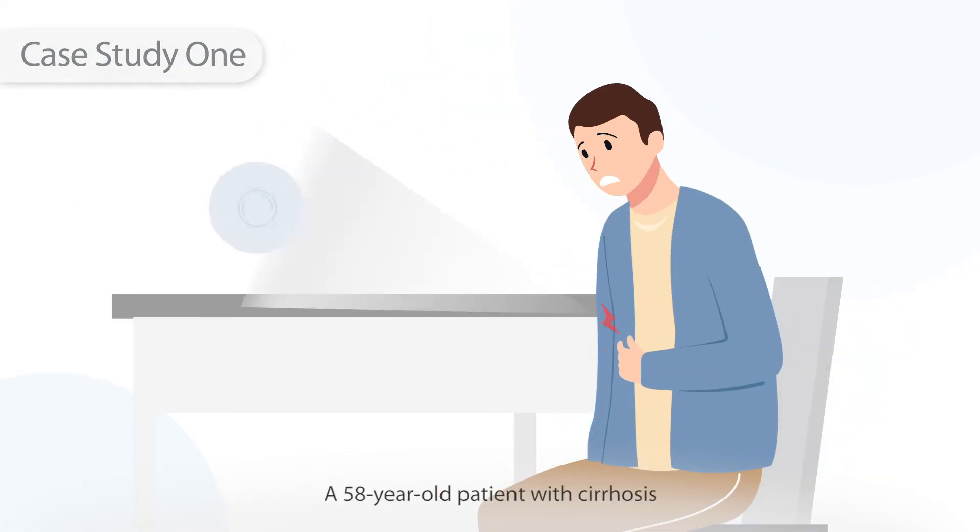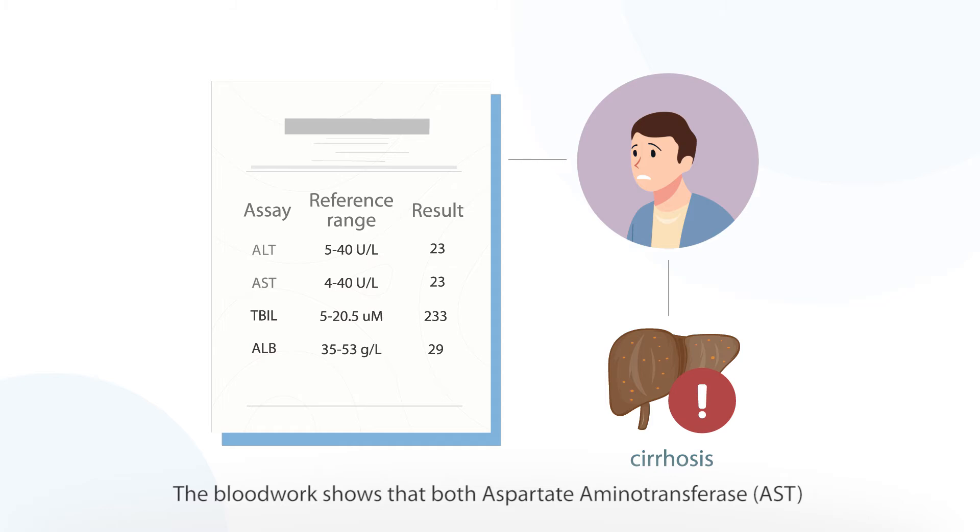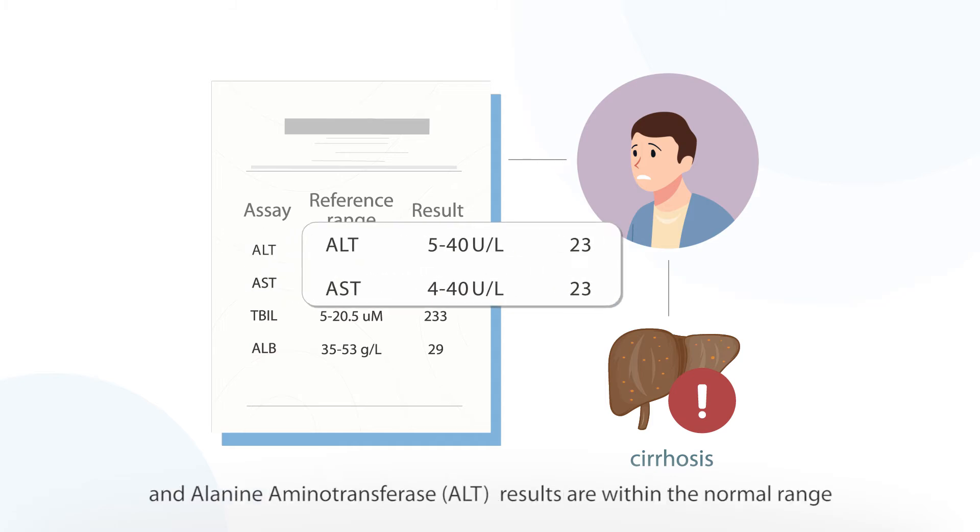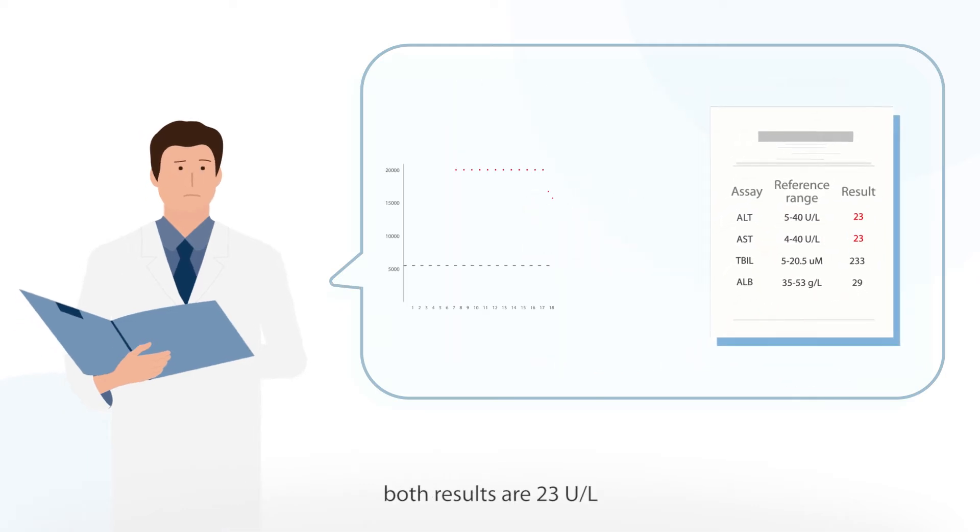Case Study 1, a 58-year-old patient with cirrhosis. The blood work shows that both aspartate aminotransferase and alanine aminotransferase results are within the normal range. Both results are 23 units per liter.